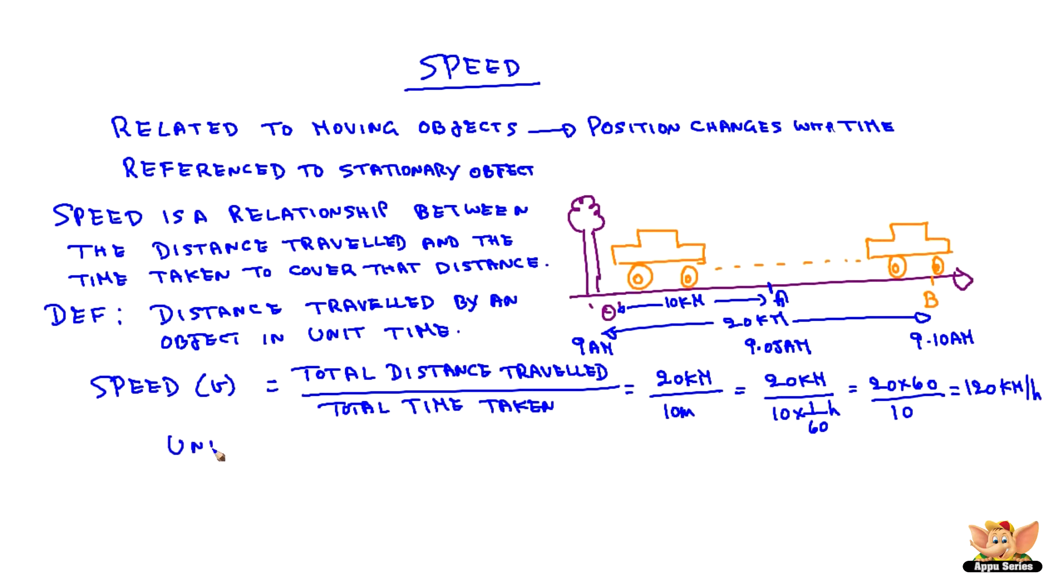The units of speed are kilometer per hour, which is given as km h^-1, or meter per second, which is given as m s^-1.